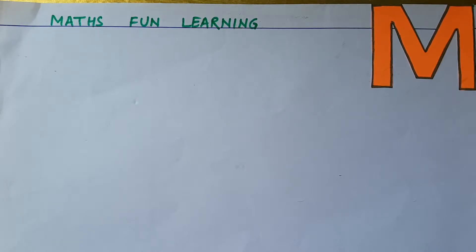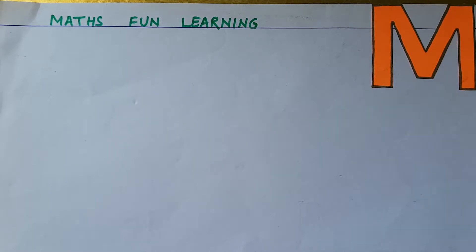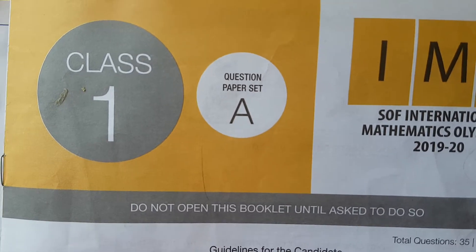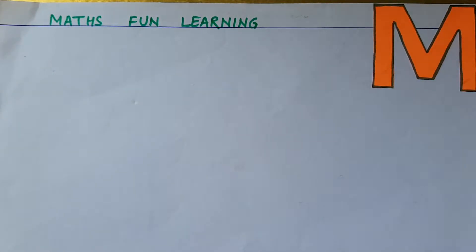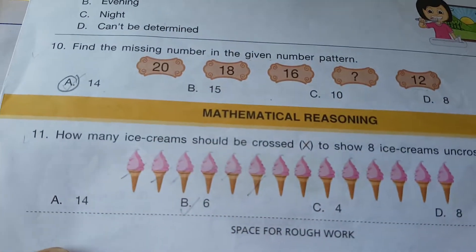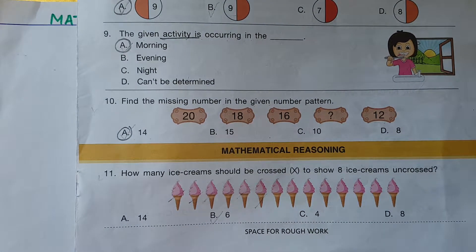Hello everyone, welcome to my channel Mass Fun Learning Kids. If you like my video please subscribe and share with your friends. Today this video is Part 2 of the International Math Olympiad paper, Class 1, Year 2019, Set A. This is the second section covering Mathematical Reasoning.